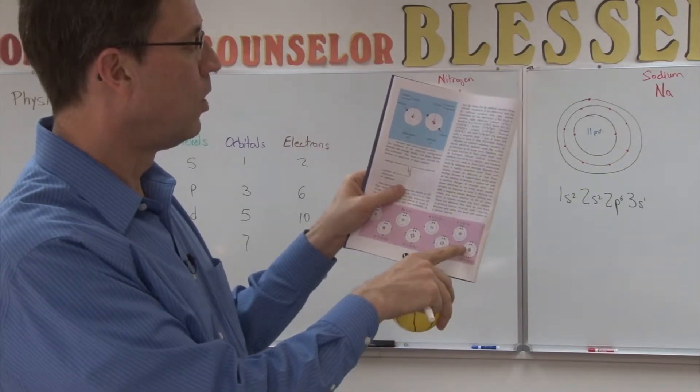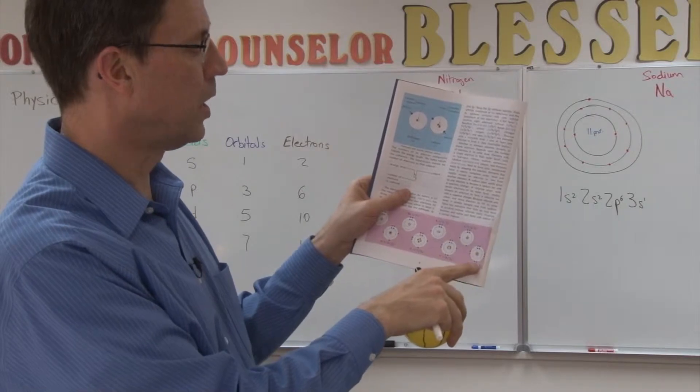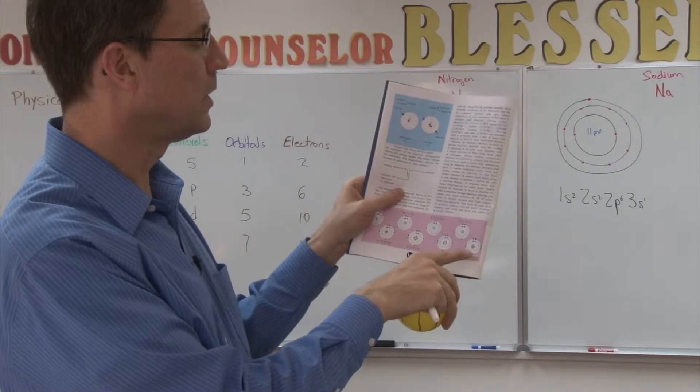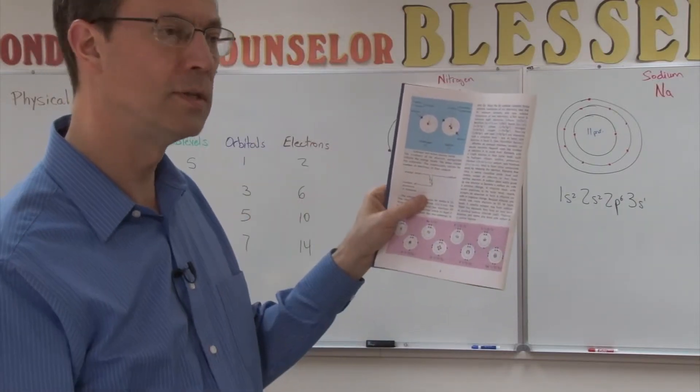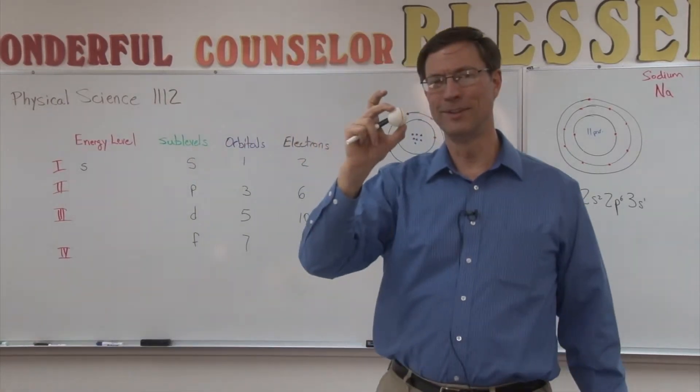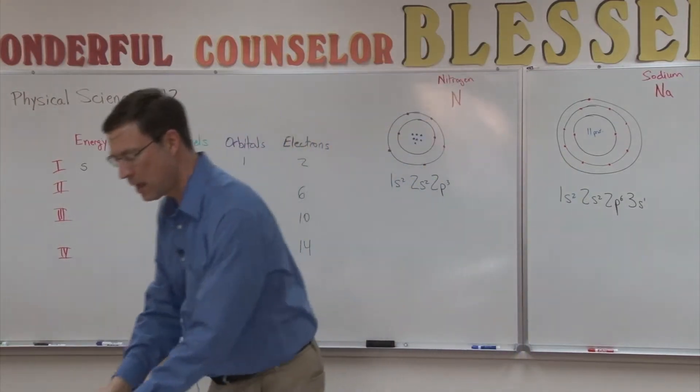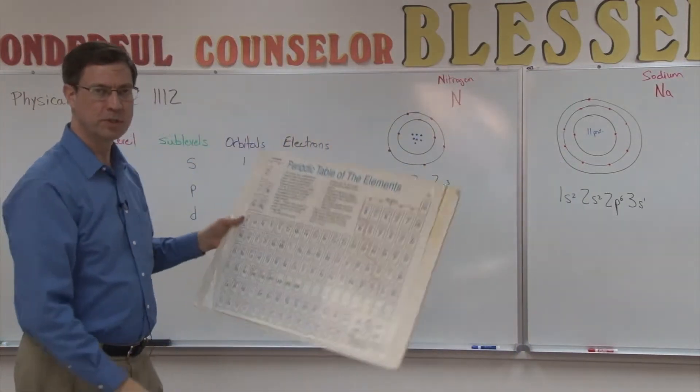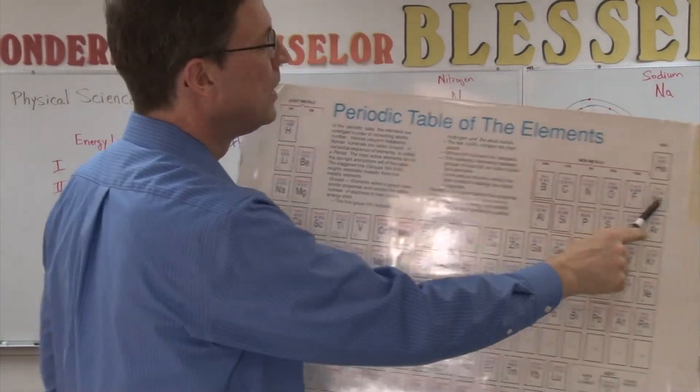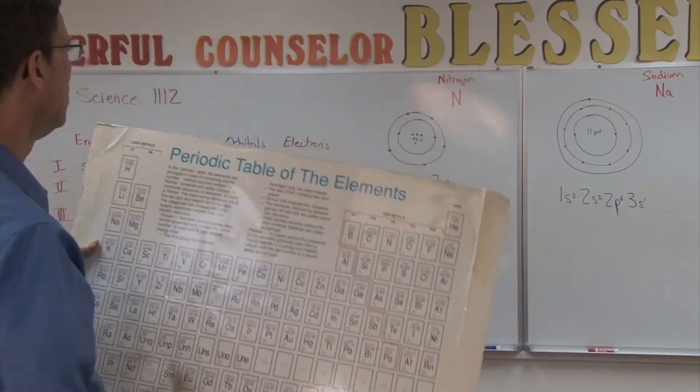When we get to neon, we have maxed out the number of electrons that can be put in the second energy level. If you count them up, we have one, two, three, four, five, six, seven, eight electrons in energy level two. See the 2S2 and 2P6. And we have two electrons underneath that in the other energy level. Energy level one had two electrons. And now we've maxed this out with eight. Add up eight plus two. Guess what you get? You get ten. And that's what element neon is, is ten protons and ten electrons.